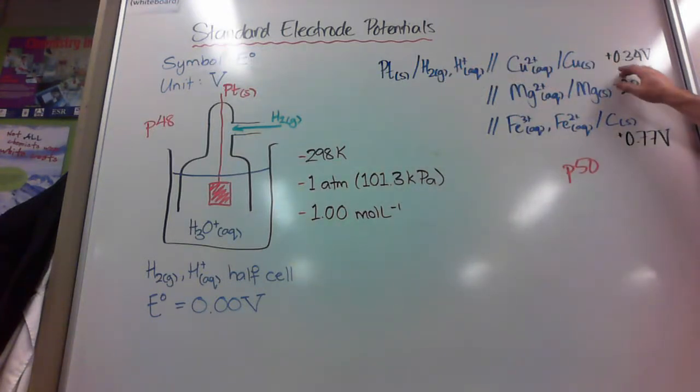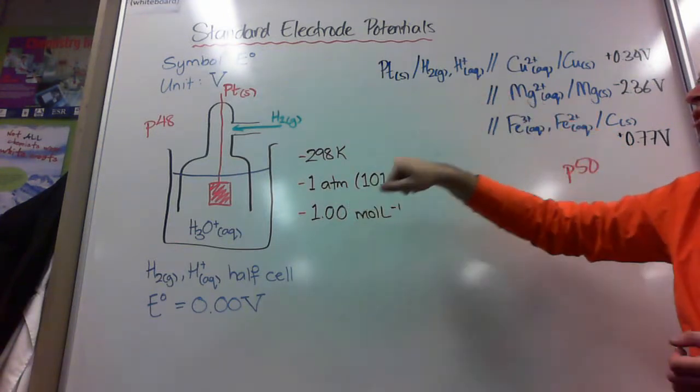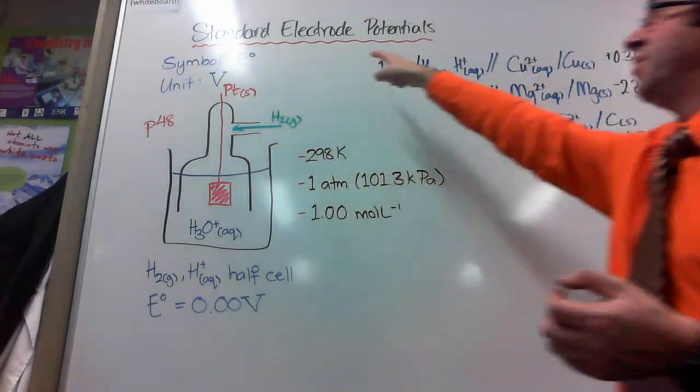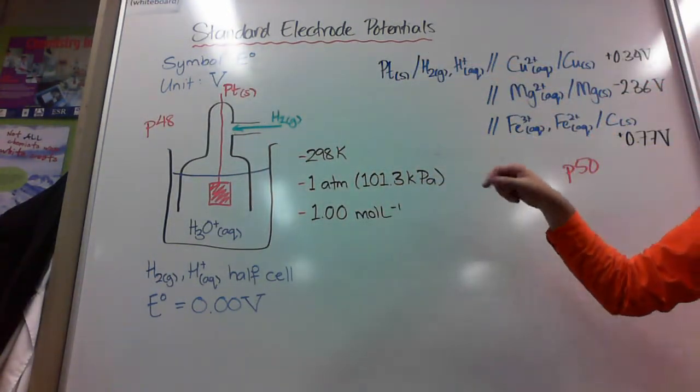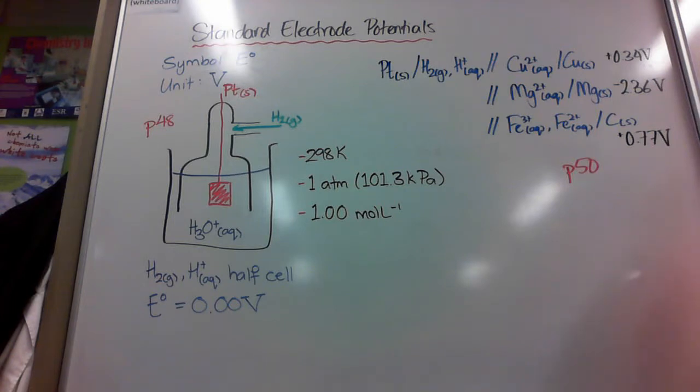So for copper, when copper is reduced to copper 2 plus along with the hydrogen being oxidized to the hydrogen ion or hydronium ion, 0.34 volts is generated, positive 0.34 volts. That means the electrons are flowing from the anode to the cathode as we'd expect. And we'd expect that because copper is not a very reactive metal. So we'd expect that the copper 2 plus would be reduced to copper. We see that in most experiments with copper sulfate, copper chloride and so on.